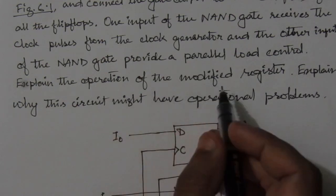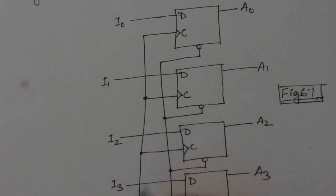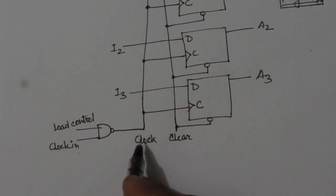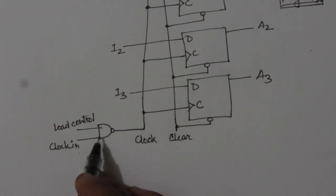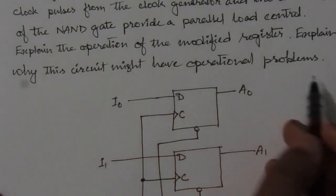Then we have to explain the operation of the modified register. Here we are given a 4-bit register. So after modifying this clock signal with a NAND gate, where two inputs will have one load control and another clock input,